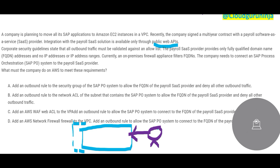There are some corporate guidelines stating that all outbound traffic must be validated. They have an allow list — think of it like a party guest list where only approved guests are allowed. The company is saying they only want outbound traffic to go to entries on the allow list. So the third-party payroll system will have to be on the allow list, otherwise it cannot communicate.